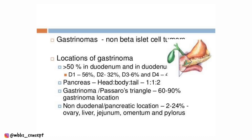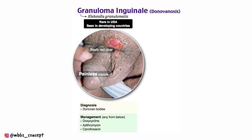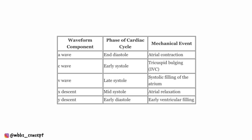The most common site for gastrinoma under MEN1 syndrome is the duodenum — but if this is incorrect, please do correct me in the comment section. In one question they were asking the cause of Donovanosis, which is Klebsiella granulomatis.